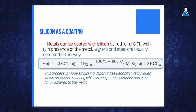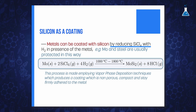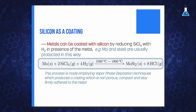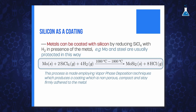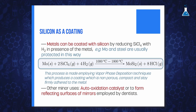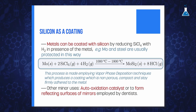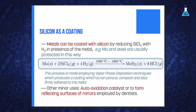Metals can also be coated with silicon by reducing silicon tetrachloride with hydrogen — molybdenum and steel are usually protected in this way. Other minor uses include as auto-oxidation catalysts or to form reflecting surfaces of mirrors employed by dentists.